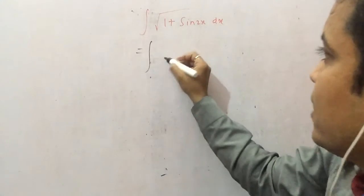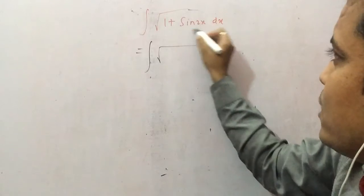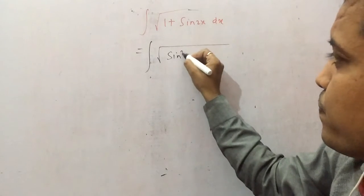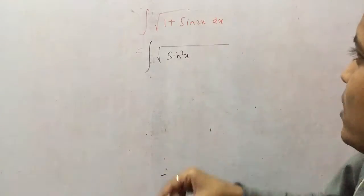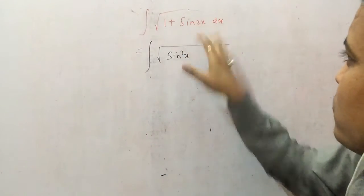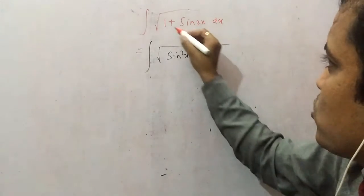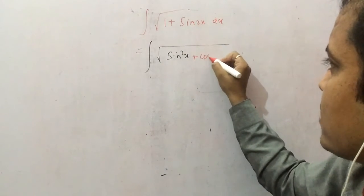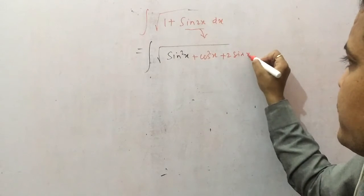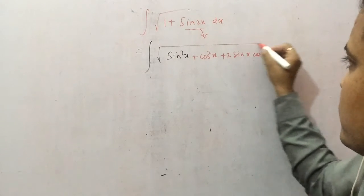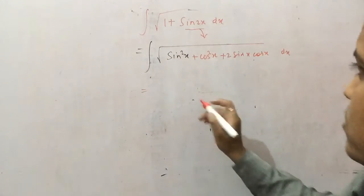Here we have 1 plus sine 2x. As you know, sine 2x is 2 sine x cos x, and we need to manipulate this because we don't have any standard form here. We know many formulas but we don't have any standard form format here, so manipulate it. Our first work is to eliminate this root.